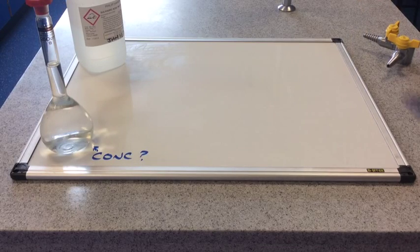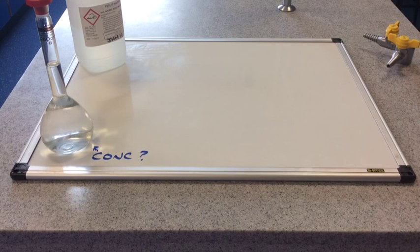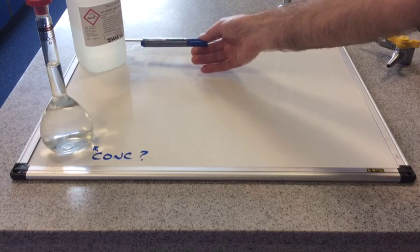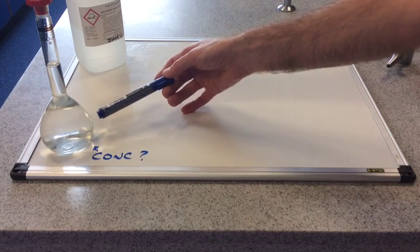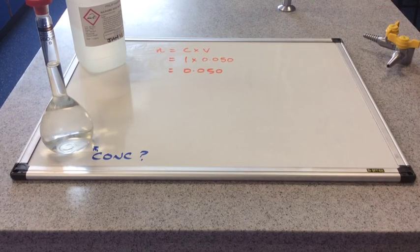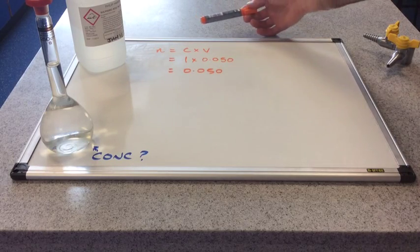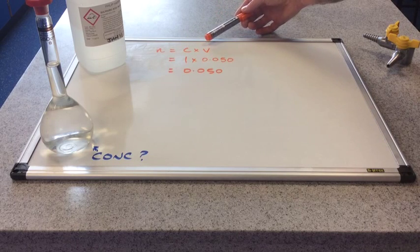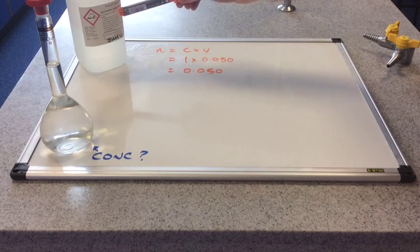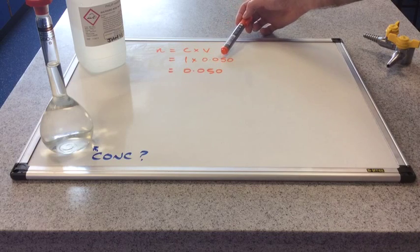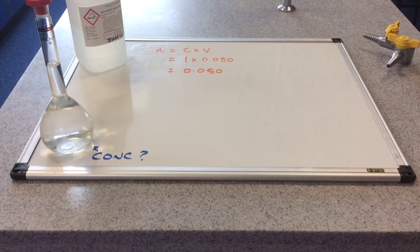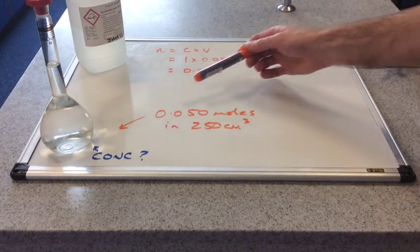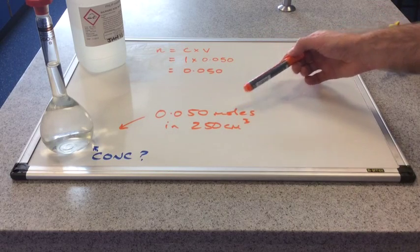So how do we go about calculating the concentration of our new acid solution that's in this volumetric flask? Well, the first thing we need to do is we need to go back to the original solution. And we're going to find out how many moles of acid we ended up putting into this flask. So if you remember, I took out 50 centimetres cubed of the acid from here. So to work out how many moles that is, the N is the moles, remember. That's calculated by multiplying the concentration by the volume in decimetres cubed. So that's one. Remember, the concentration is one capital M, one molar. One times 0.050, which is obviously 0.050 moles.